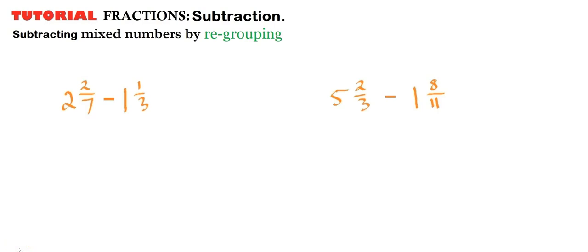I'm going to do these subtractions by regrouping. So what we're essentially doing here is we're going to break up 2 and 2 sevenths into a 2 and 2 sevenths, and this 1 over here, another whole number, and this 1 third comes over here.